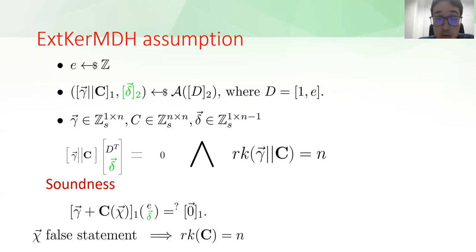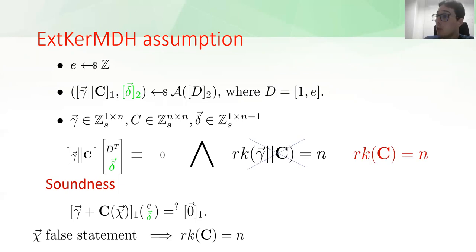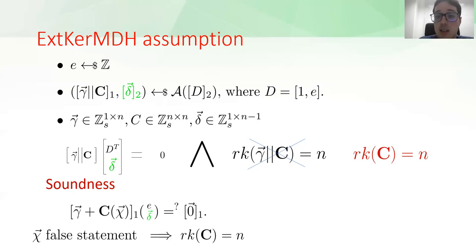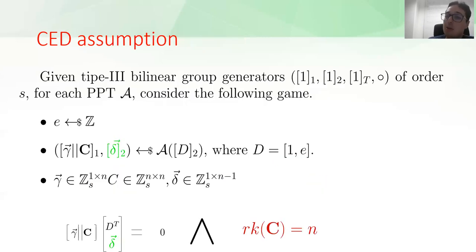Why is this sufficient for soundness? If x is a false statement, then C(x) has rank n, and then the cheating adversary's satisfaction of the verification equation can be used to show it breaks the XKernMDH assumption. However, we actually require a weaker condition for soundness—we only require that the rank of C equals n, not the rank of the full concatenated matrix. This means we don't need the full power of XKernMDH, but only a weaker version that is sufficient for soundness of our basic argument, which is why we introduce the CAD assumption.